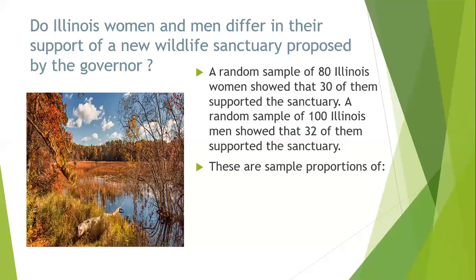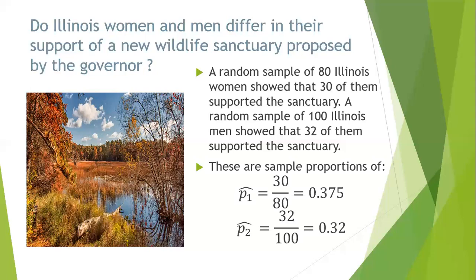A random sample of 100 men shows that 32 of them support the sanctuary. From that we have some sample proportions. First we would have P1 hat, the sample proportion of women who support the sanctuary: 30 divided by 80, or 0.375. Next, the sample proportion of men who support the sanctuary: 32 out of 100, or 0.32. Those are our initial statistics.